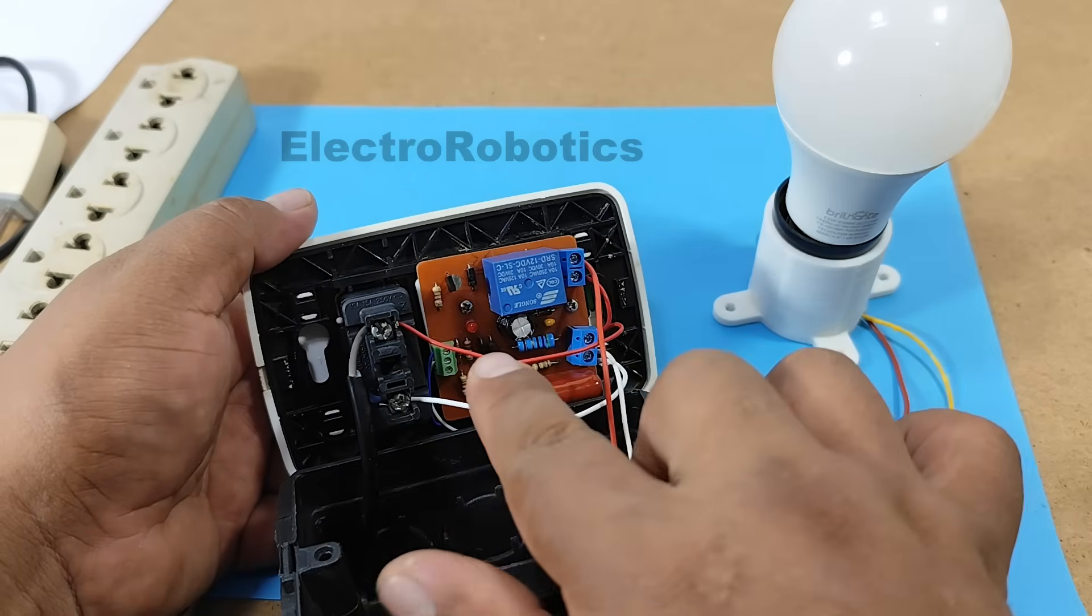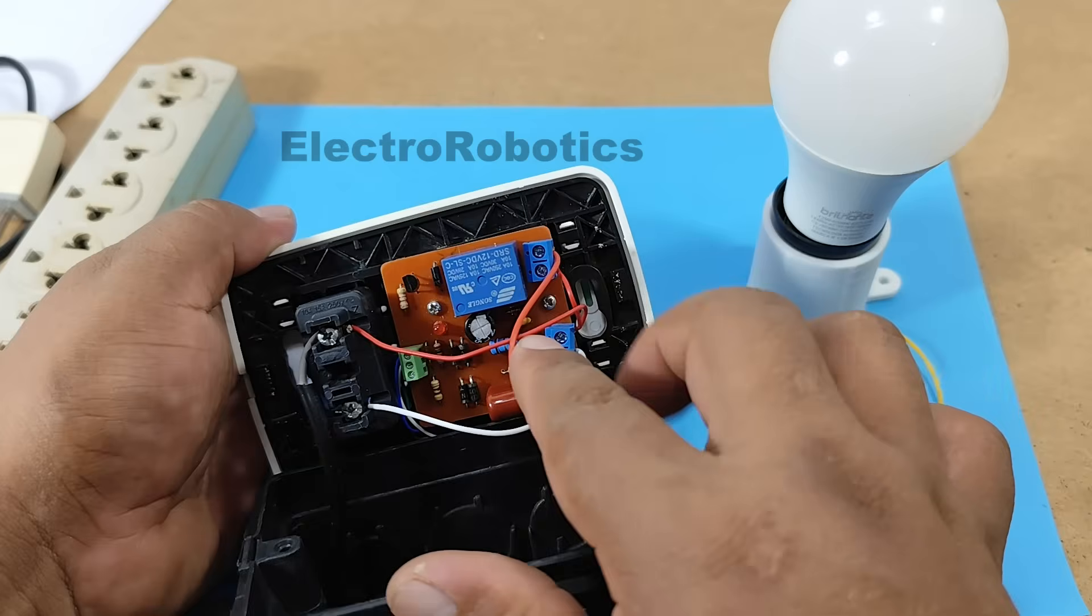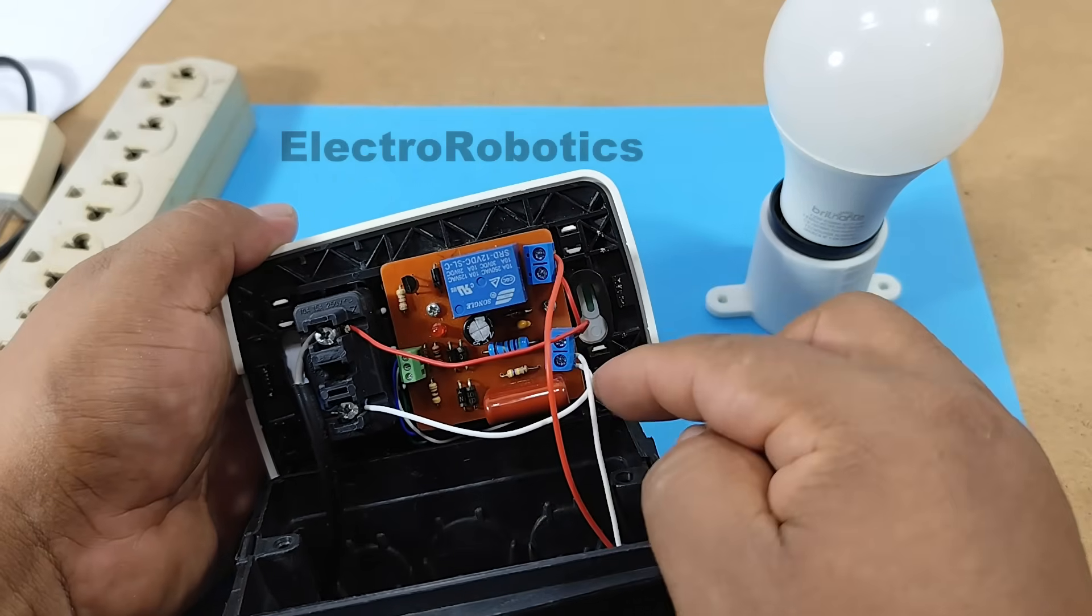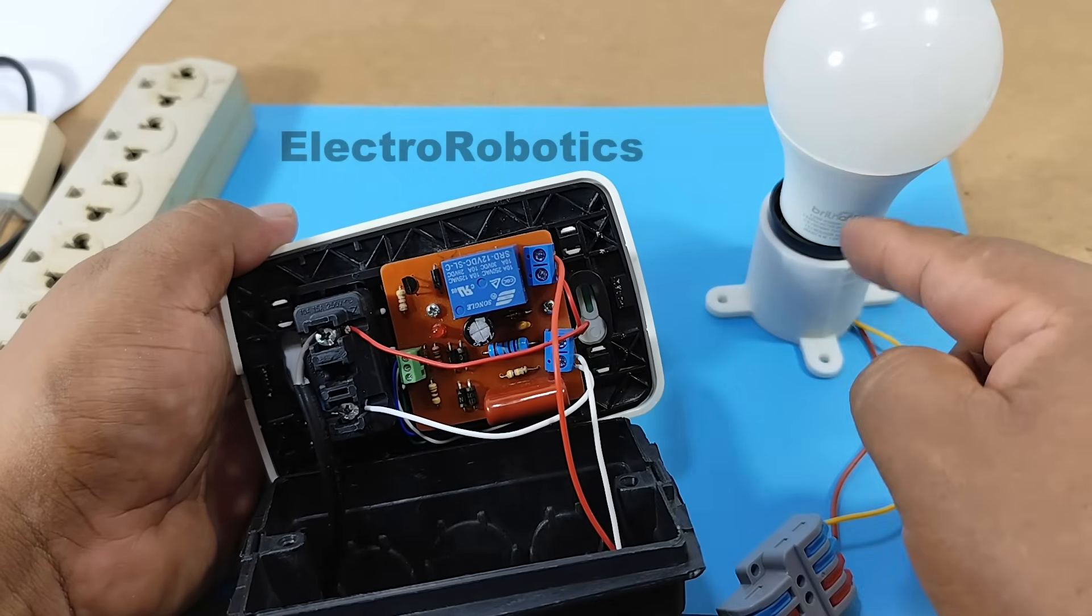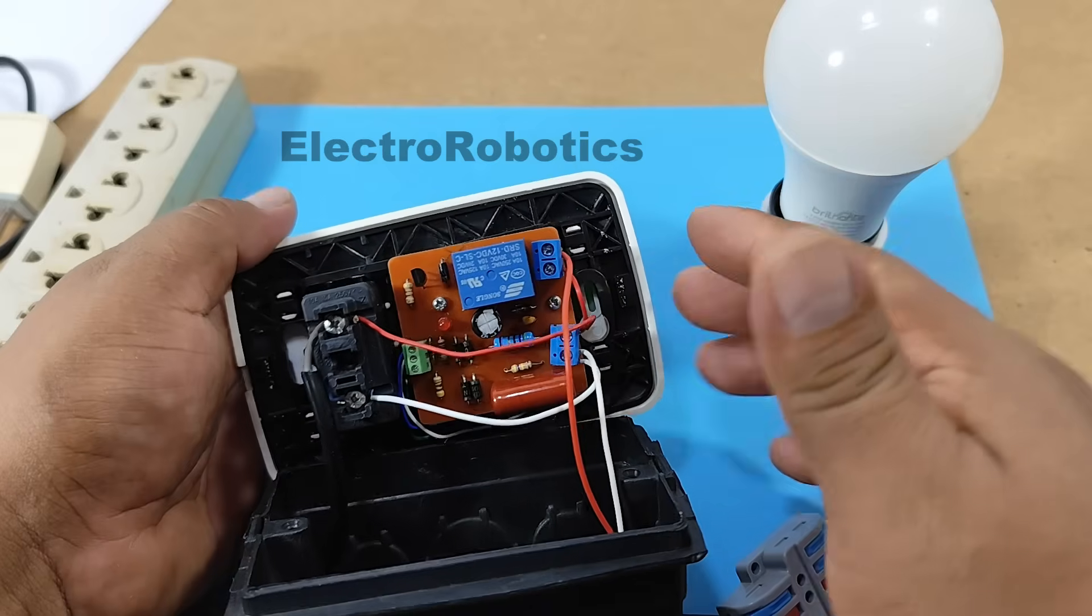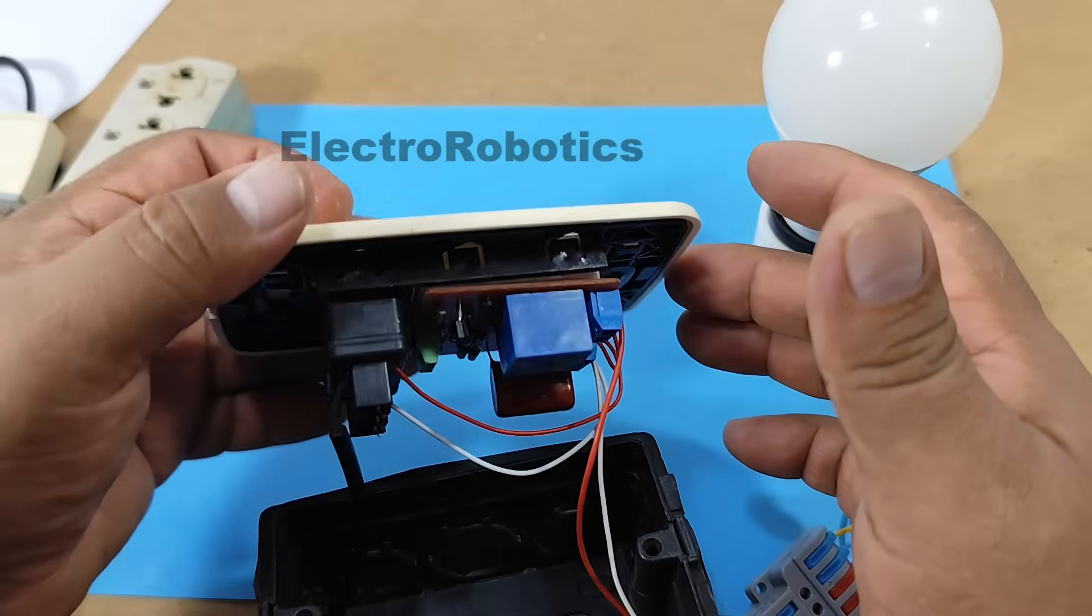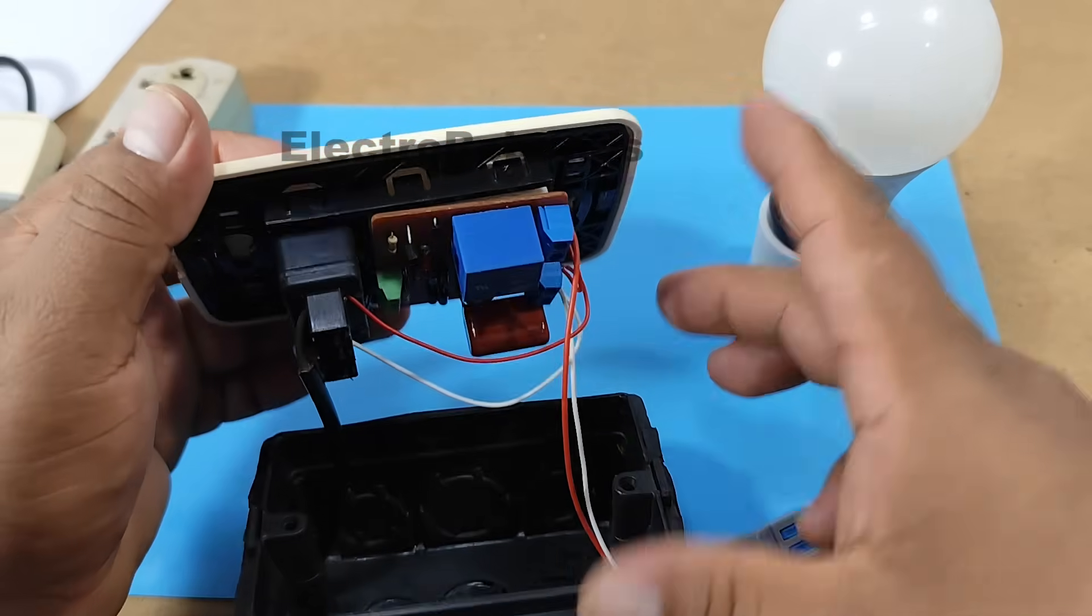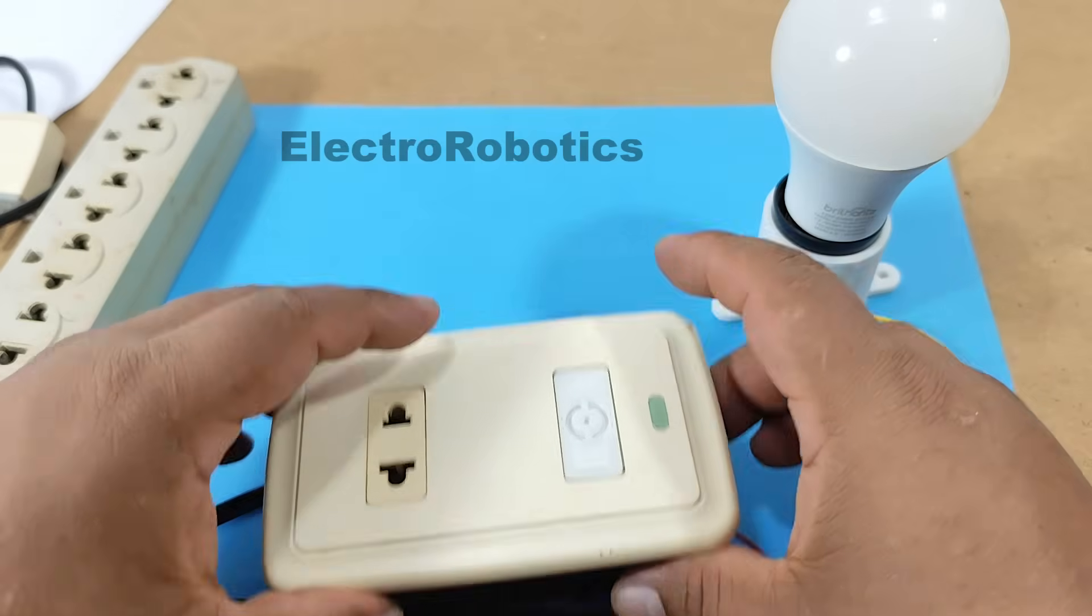And from there, we're taking the live wire. The live wire connects to the relay terminal block. The neutral wire also connects directly to the light bulb, as indicated by the connections. And as you can see, it's perfect, and everything fits into the box without any problems.